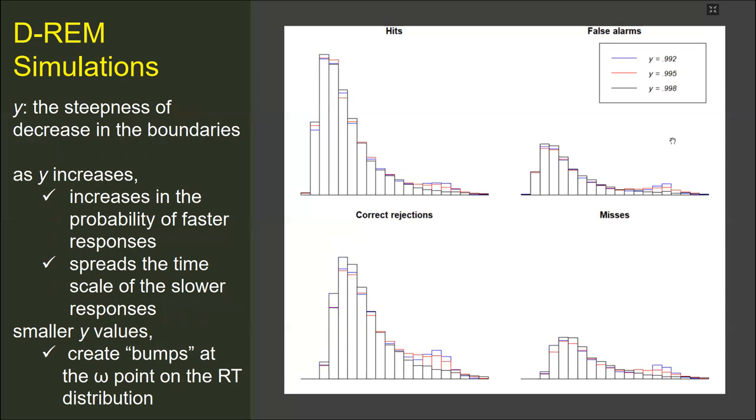And the same goes for the psi parameter, which determines the steepness of decrease in the boundaries. In simulations, higher values increase the probability of faster responses and also spread the time scale of the slower responses. Moreover, smaller psi values tend to create bumps at the omega point on the RT distribution, since there are more unfinished decisions until the omega time step. The optimization of parameter psi seems especially important in the model procedures, which will be made in the future, since the parameter value substantially changed the shape of the response time distributions.